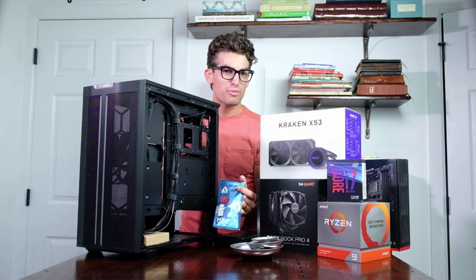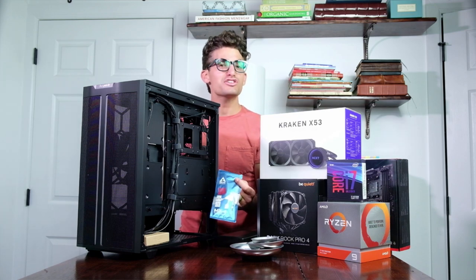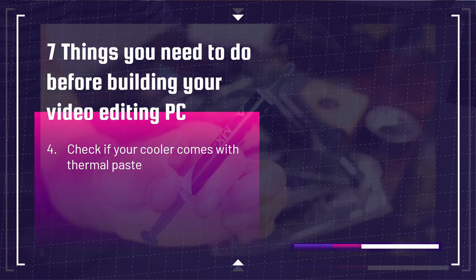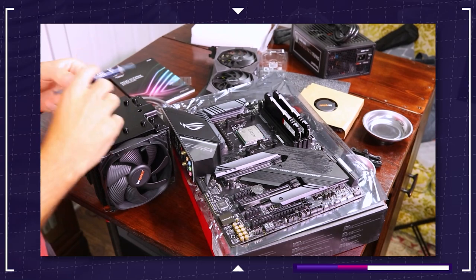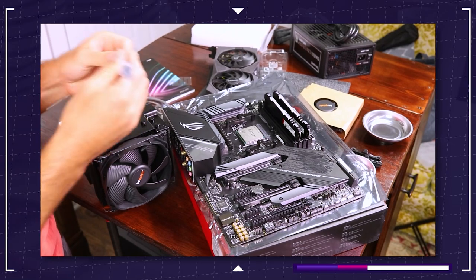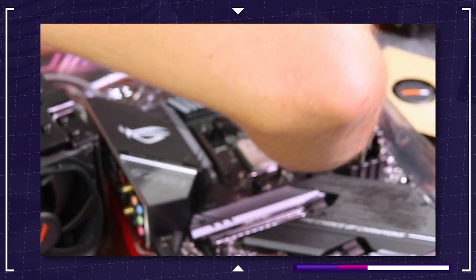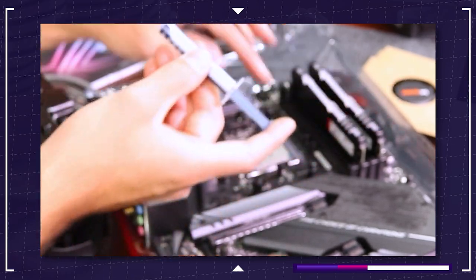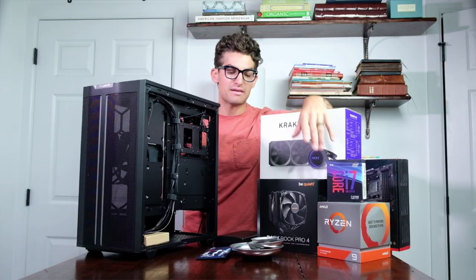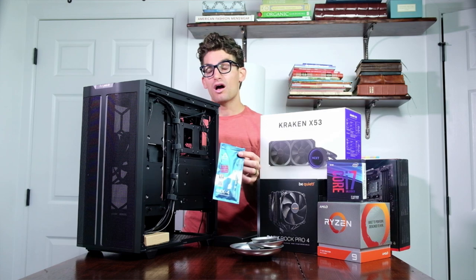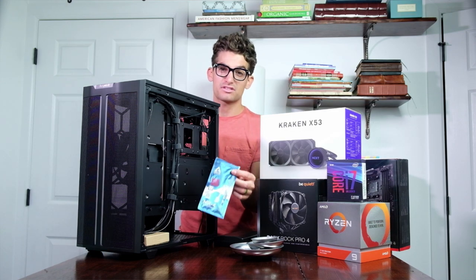Next up is thermal paste. Does your AIO or air cooler come with thermal paste pre-applied? If not, you're going to want to pick up a small tube and apply it before mounting your cooler onto your CPU. Don't cheap out on thermal paste — spend the extra few bucks and get some well-rated paste. I went with the Arctic MX4 thermal compound and it's worked great on my builds.